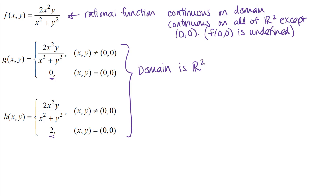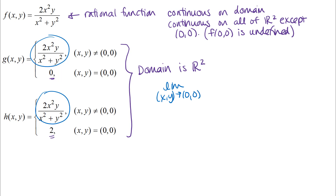That limit at the origin might be the place where we could run into some trouble with continuity of these two functions. Fortunately, the part of the function where (x,y) is not equal to (0,0) is the same for both of those functions. So I can consider the limit as (x,y) approaches (0,0) of 2x²y over x² + y², and that will tell me something about both functions. One thing you might consider is looking at a graph to think about whether this limit exists or not.